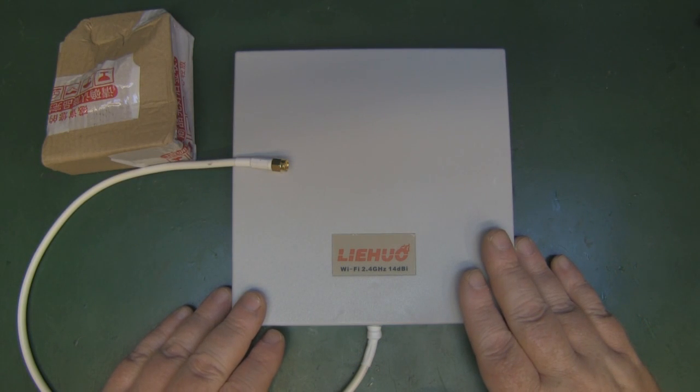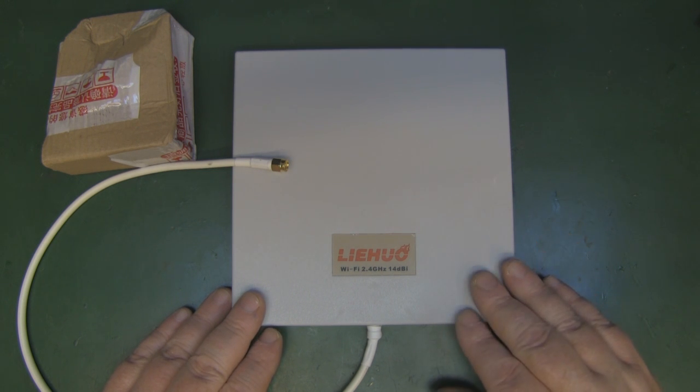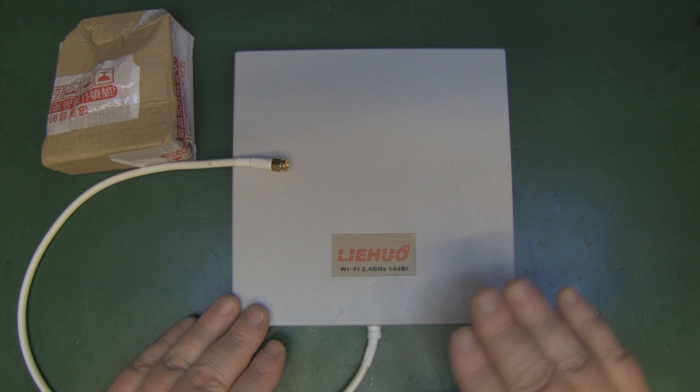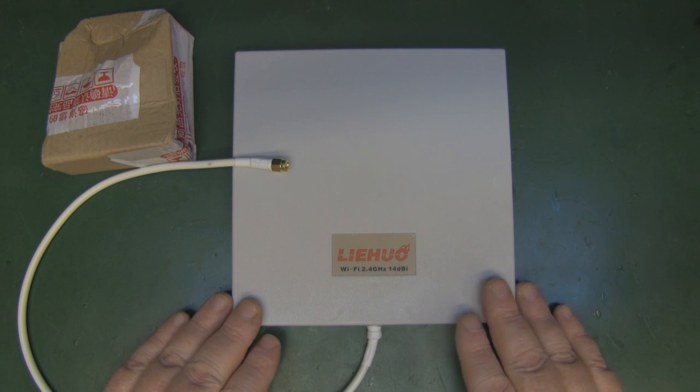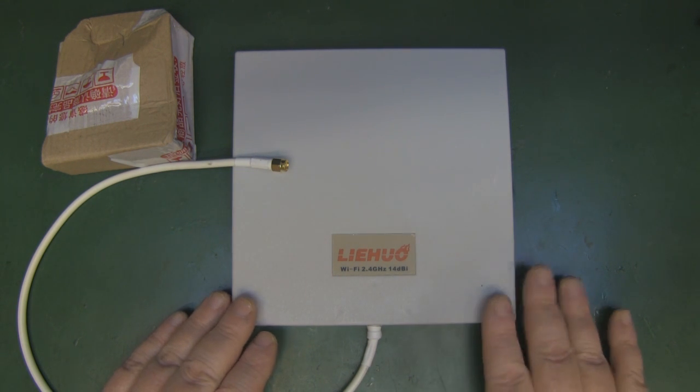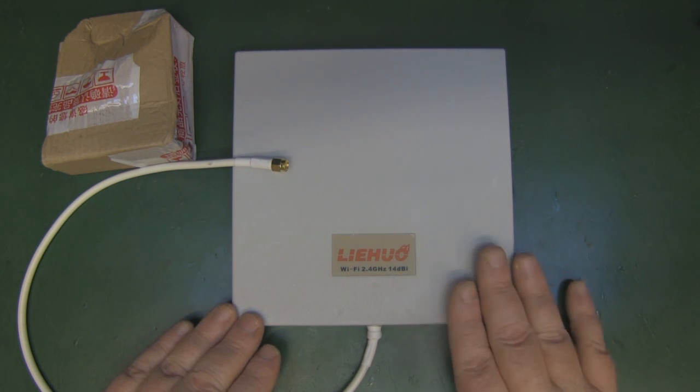On the bench today I've got one of these 2.4 gigahertz Wi-Fi panel antennas. There's quite a few of these turned up on eBay recently. It's not a new thing, I've seen them over the years, but there's quite a bit of competition on the pricing of these now.